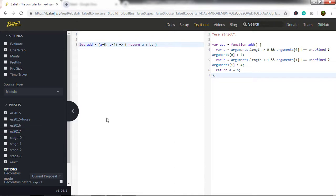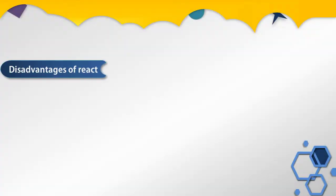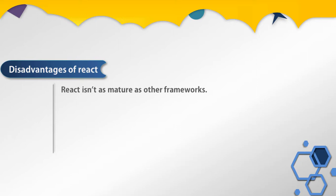Now you know the basics of Babel. We are going to understand a few disadvantages of React. Of course, every framework has its own drawbacks and React is one of them. Some differences like declarative versus imperative are highly subjective, so they can be both pros and cons. The first disadvantage of React is that React isn't as mature as other frameworks.